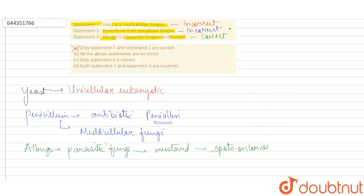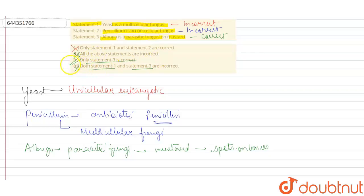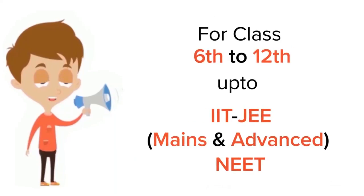Statements 1 and 2 are incorrect and statement 3 is correct, so option C is correct. Option B is wrong because it says all statements are incorrect, but statement 3 is correct. Option D is also wrong because it says both statements 1 and 3 are incorrect. So the correct answer is option C — only statement 3 is correct.